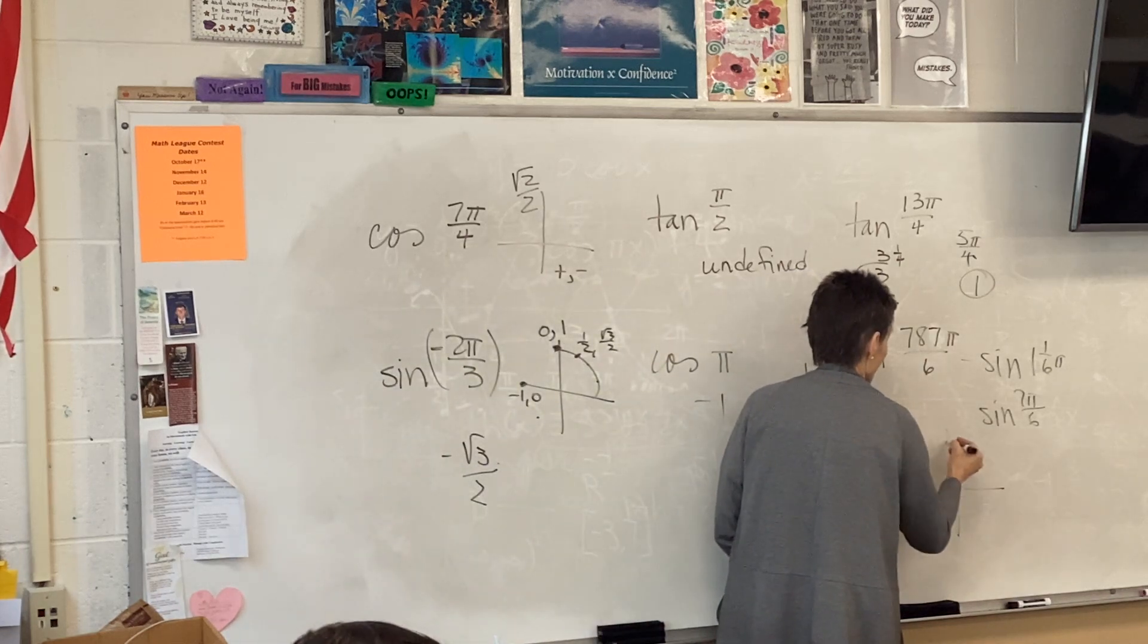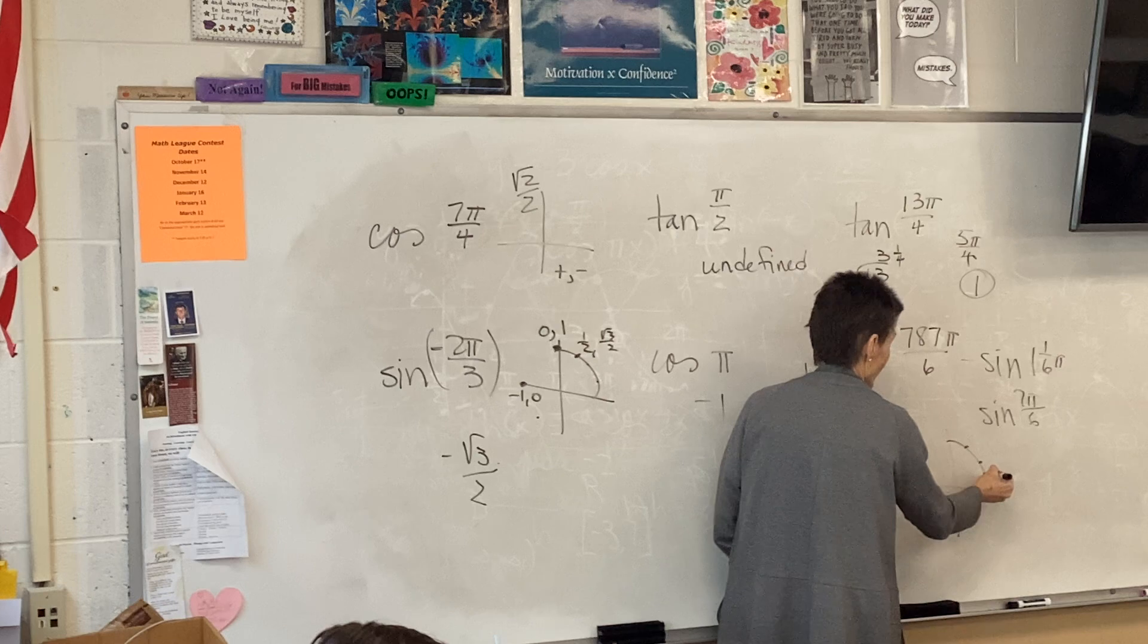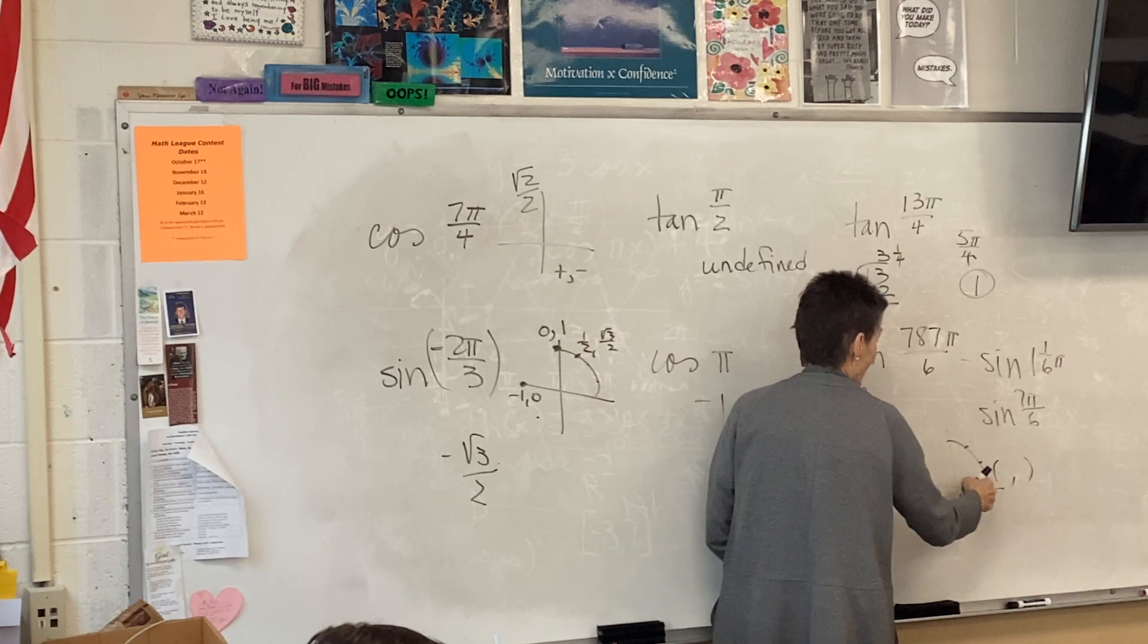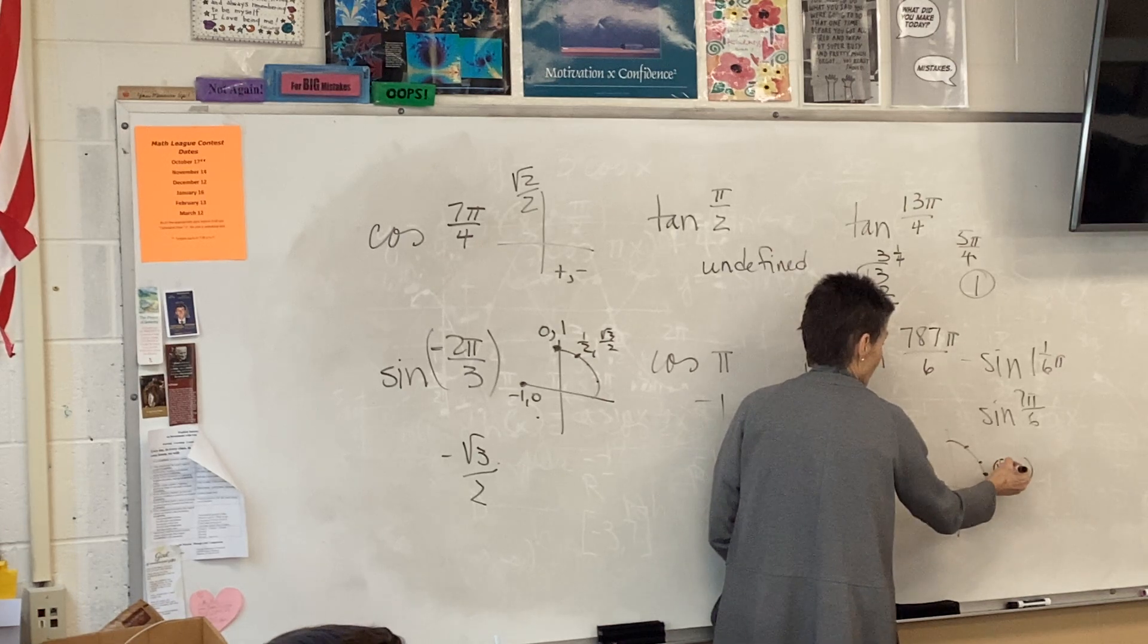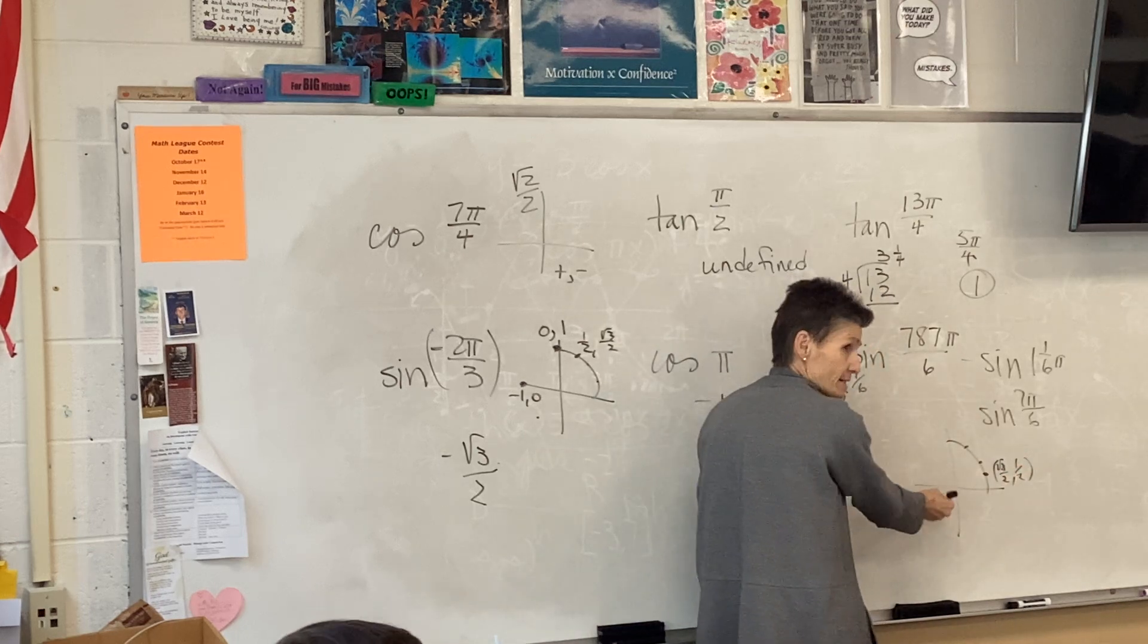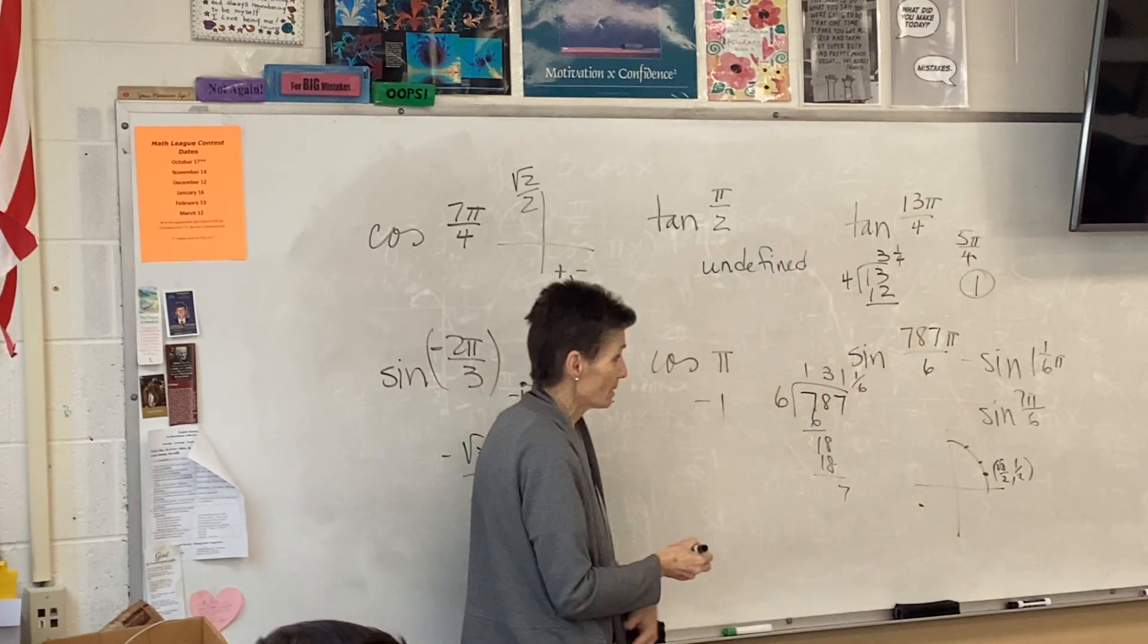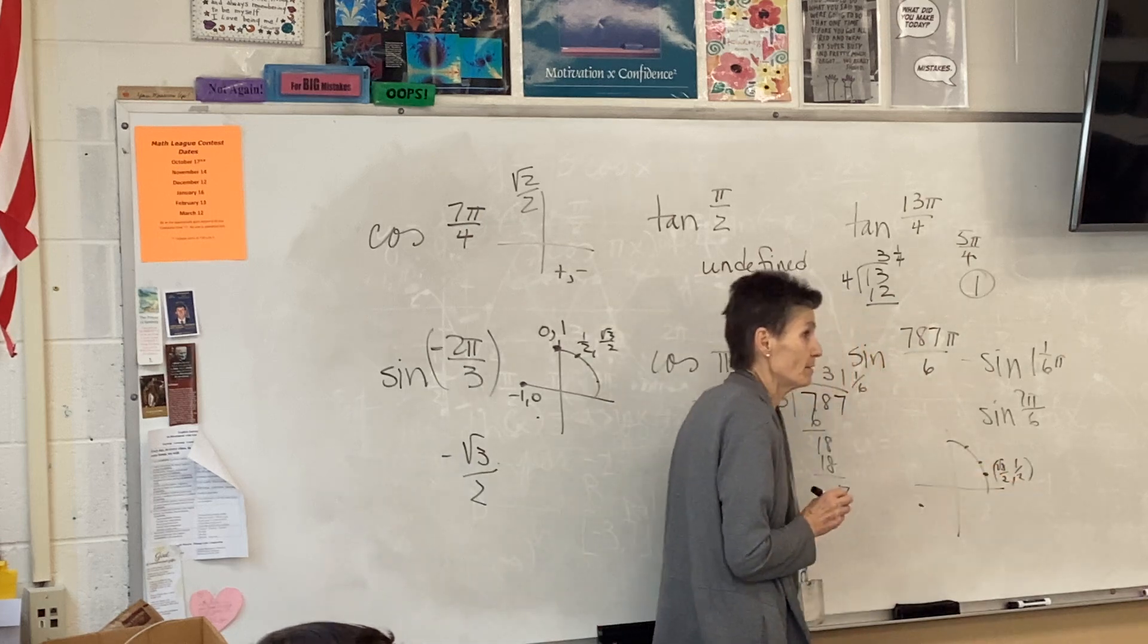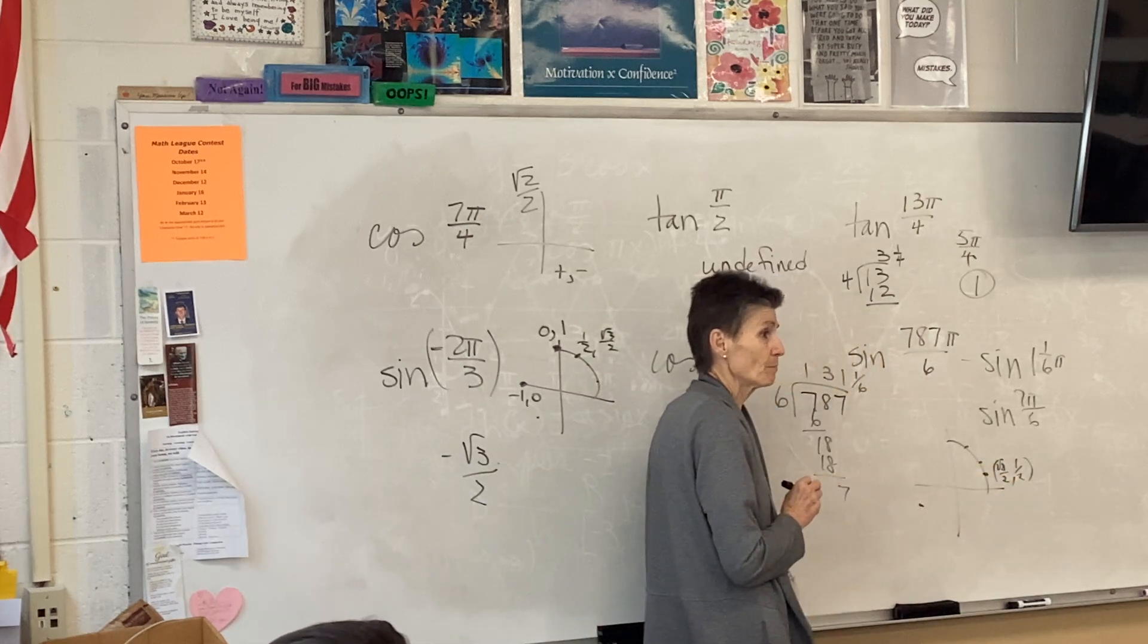So here we are. Here's a sixth right here. I know that point is √3 over 2, 1 half. But 7 sixths is down here. So the 1 half, which is a sine, will be negative.